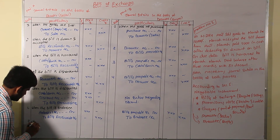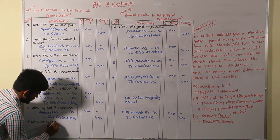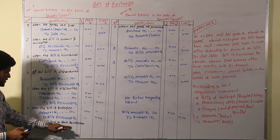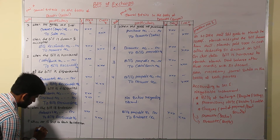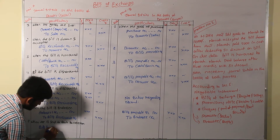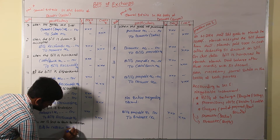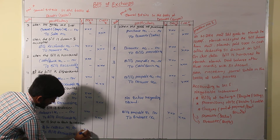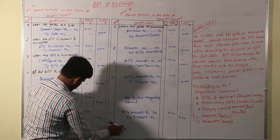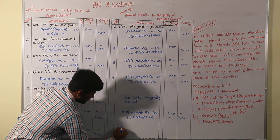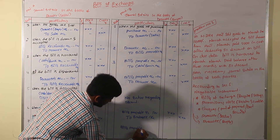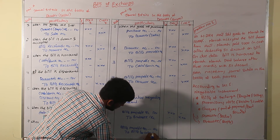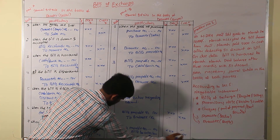When the bill is sent to the bank for collection, the entry is: bills sent for collection account debit, to bills receivable account. And this entry is opposite in the drawee's books: bills receivable comes over as bills receivable. When the bill is sent to bank for collection, the account entry is recorded accordingly.